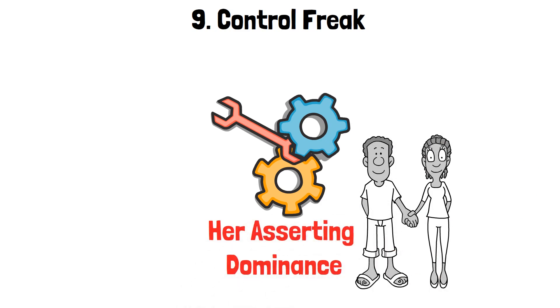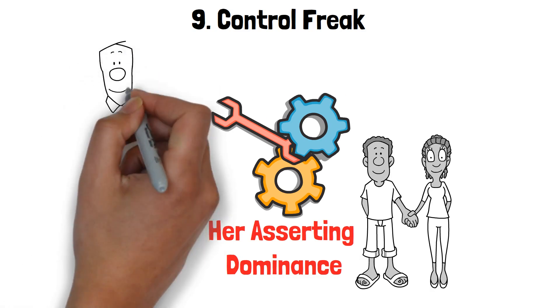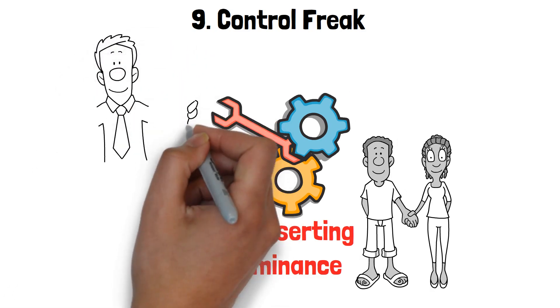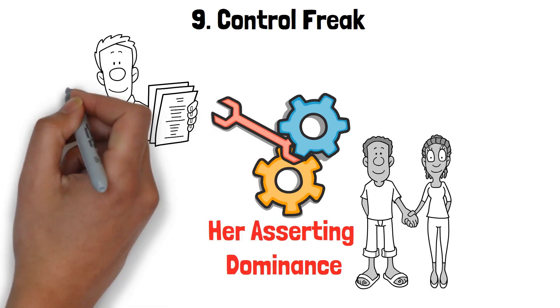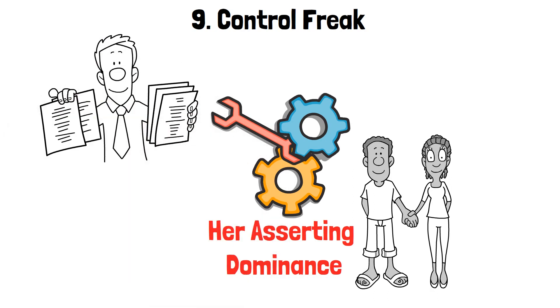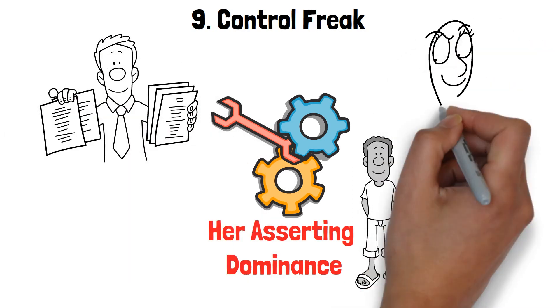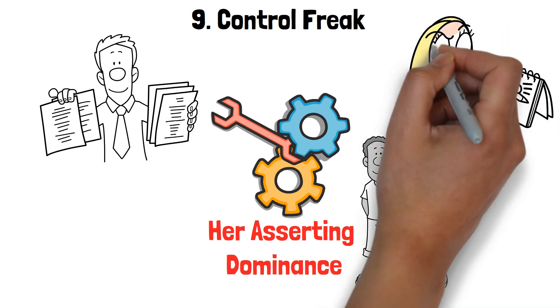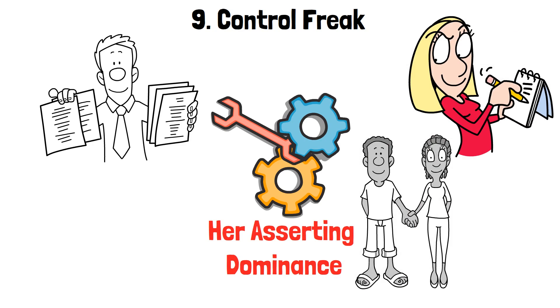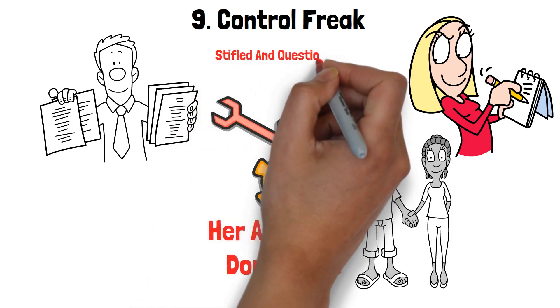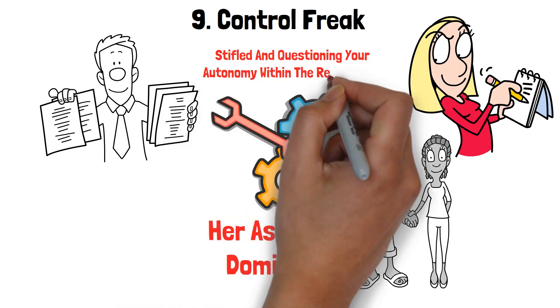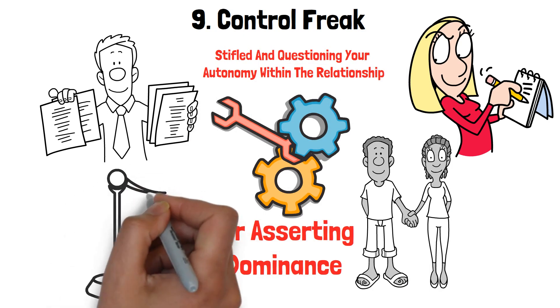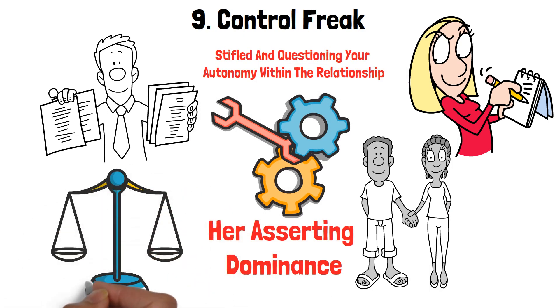This need for control can manifest in various ways, from meticulously planning every aspect of your life to demanding things be done exactly as she envisions. Any deviation from her prescribed path is met with resistance, or even anger. This constant battle for control can leave you feeling stifled and questioning your autonomy within the relationship. Balancing your own desires and needs with her need for dominance can be a constant struggle.